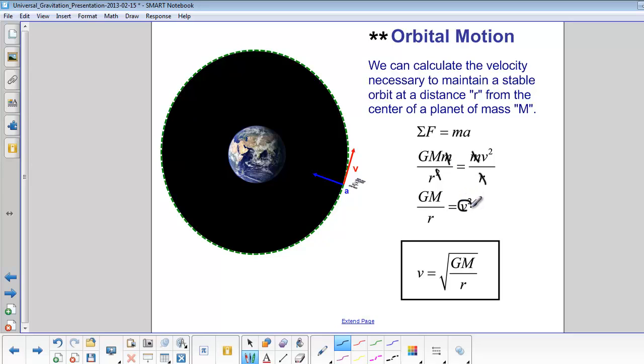If we're looking for v, we take the square root on both sides, and we end up with the square root of GM over r. This is the velocity needed to maintain a stable orbit around a planet with mass M at a distance r from the center of the planet.